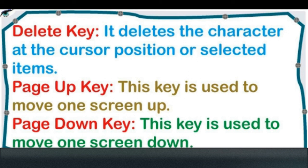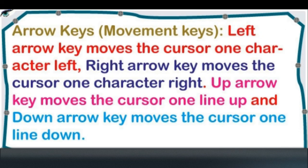Page Up key is used to move one screen up. Page Down key is used to move one screen down. Arrow keys are movement keys: Left Arrow key moves the cursor one character left, Right Arrow key moves the cursor one character right.